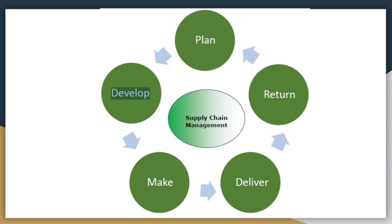For example: कि आपको कोई product चाहिए, तो पहले company ने plan बनाया, फिर उसको develop किया, फिर product को बनाया, फिर आपने order किया तो वो deliver करती है, और अगर आपको पसंद नहीं आया तो आप return करते हैं।